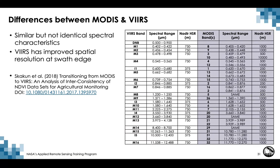VIIRS was intended to provide continuity to the AVHRR and MODIS missions. While there are many similarities between the MODIS and VIIRS instruments, there are a few important differences: there are similar but not identical spectral characteristics, and VIIRS has improved spatial resolution at swath edge. For more information on similarities and differences in the context of calculating vegetation indices for agricultural monitoring, a reference by Skakun, Jastis, Vermote, and Roger is provided.